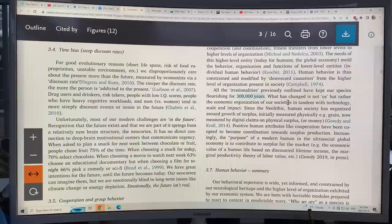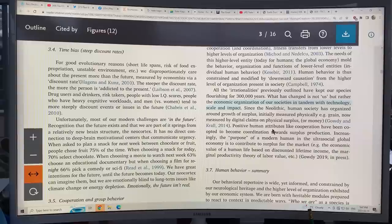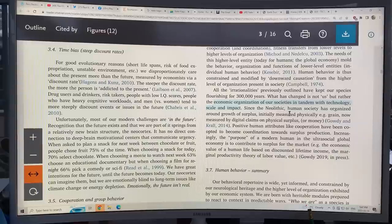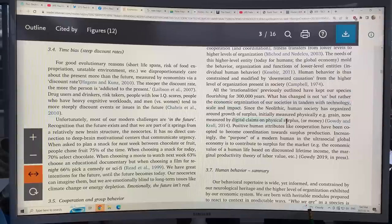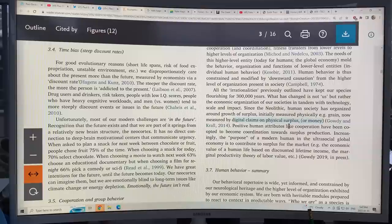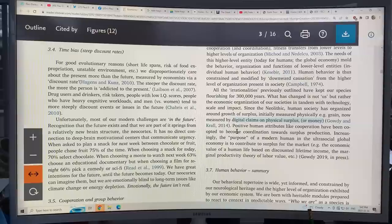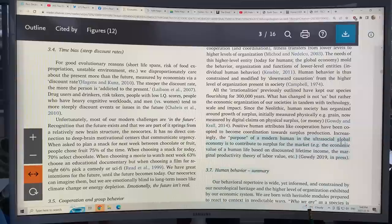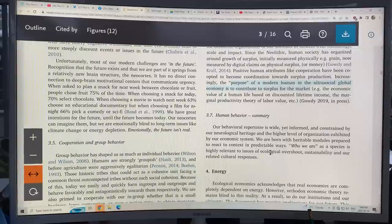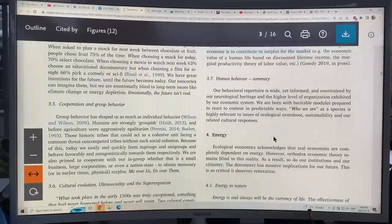All the irrationalities previously outlined have kept our species flourishing for 300,000 years, so it's worked. What has changed is not us, but rather the economic organization of our societies in tandem with technology, scale, and impact. Since the Neolithic, human society has organized around growth of surplus, initially measured physically, for example grain, now measured by digital claims on physical surplus or money. Cooperation has been co-opted to become coordination towards surplus production. Increasingly the purpose of a modern human in the ultra-social global economy is to contribute to a surplus of market. So human behavior, who we are, it all gets to that.